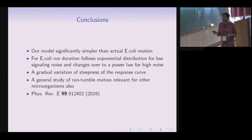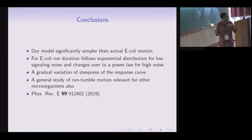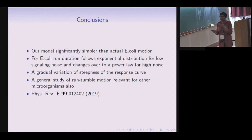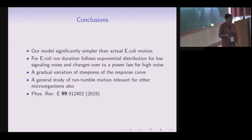In conclusion, the model we studied is simpler than actual E. coli motion: for E. coli the tumbling bias shows a continuous sigmoidal dependence on CheY-P concentration, whereas we assume switching probability jumps directly from 0 to 1. This leads to some differences from actual E. coli behavior, but one could study a crossover by starting with a sigmoidal dependence and varying its steepness. These results were recently published, and I thank you for your attention.